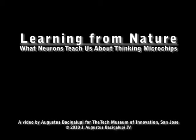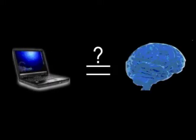By comparing microchips with neurons we can better understand both computation and thinking. So how are the microchips in our computers like neurons in our brain? Are they the same?